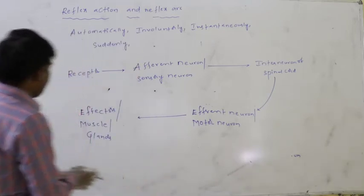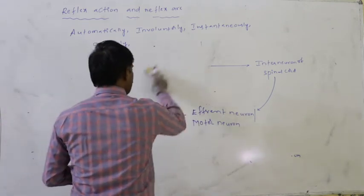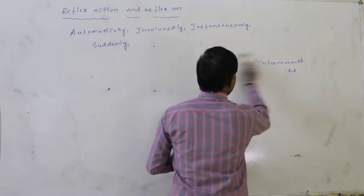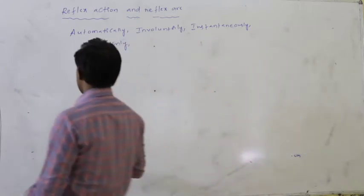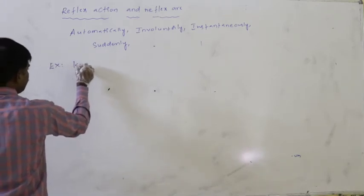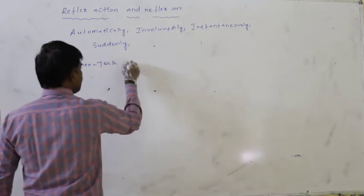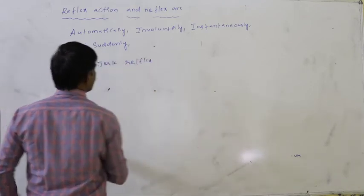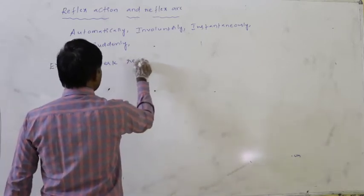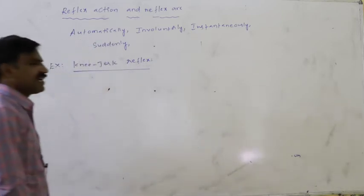The best example given in our syllabus to explain reflex action and the reflex arc is the knee-jerk reflex. The knee-jerk reflex is a better example for reflex action.